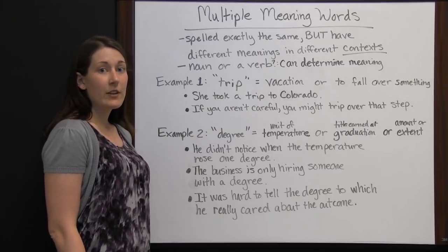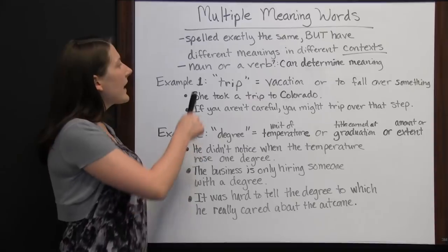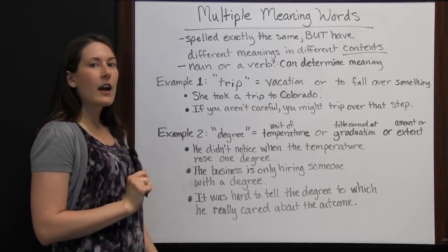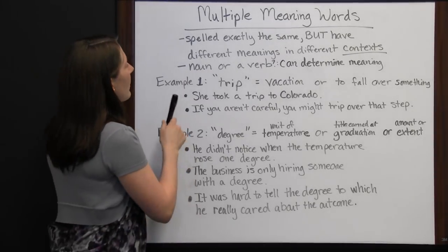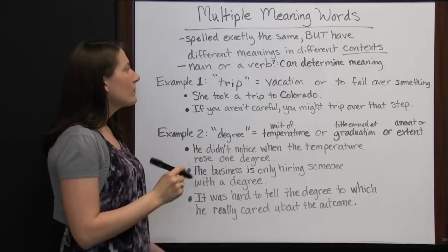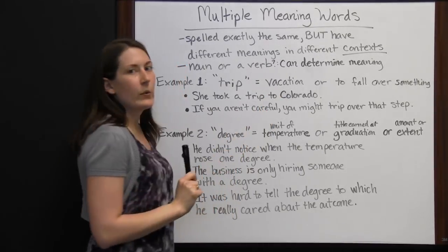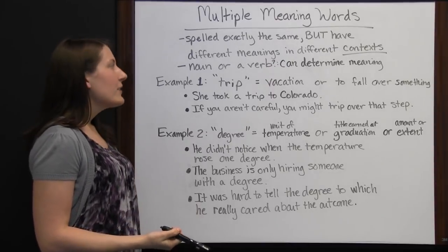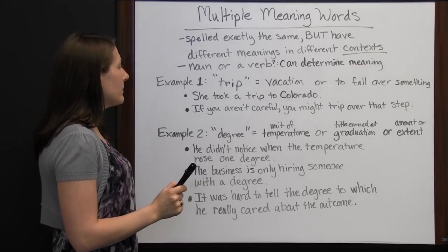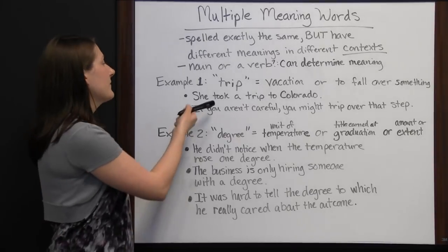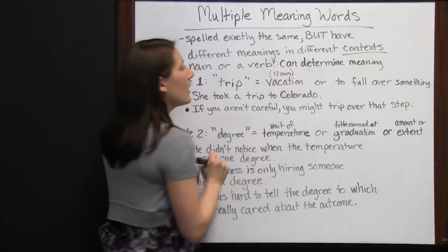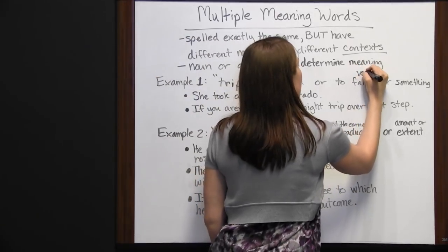Multiple meaning words. Some words are spelled exactly the same but have different meanings in different contexts. You have to look at context clues to figure out which version of the word you have in your sentence. One way is to look at whether the word is a noun or a verb — the grammatical category can determine what the word means. For example: 'trip' can be a vacation, which is a noun, or it can mean to fall over something, which is a verb.